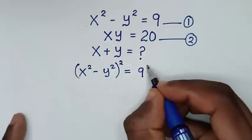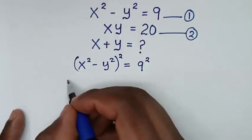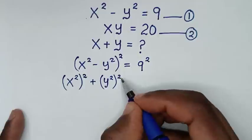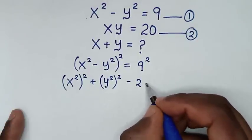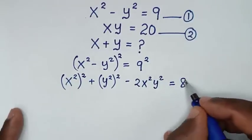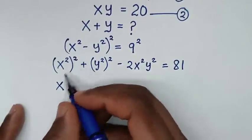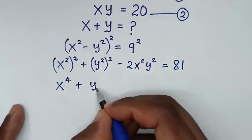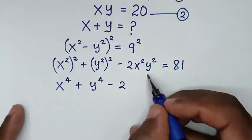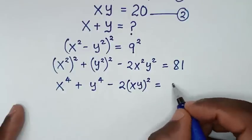In the first step we'll start by squaring both sides. Then the square of x squared minus y squared will expand. It will be x squared bracket squared plus y squared bracket squared, then minus 2 times x squared times y squared, is equal to 9 squared, which is 81. Then in the next step it will be x to the power 4 plus y to the power 4, then minus 2 into x squared y squared, which is the same as xy bracket squared, is equal to 81.